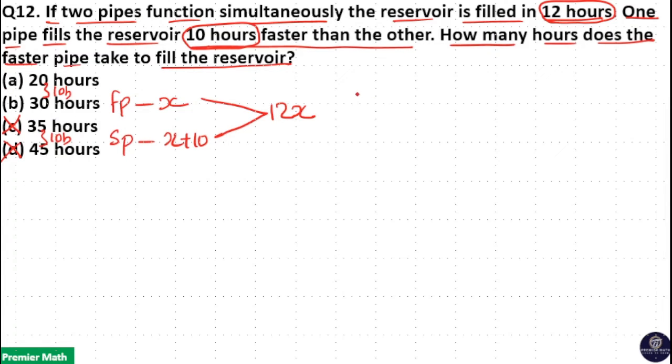Now, if I take A and B, that is, let's take the faster pipe takes 20 hours to fill the tank and the slower pipe takes 30 hours to fill the tank. The difference is 10 here.